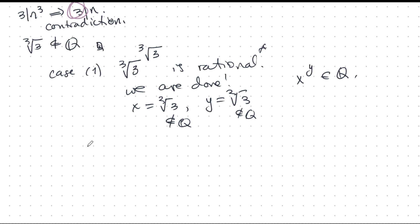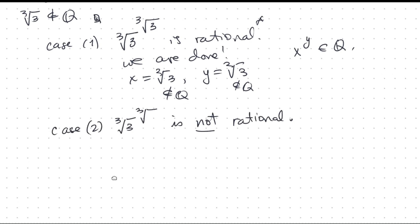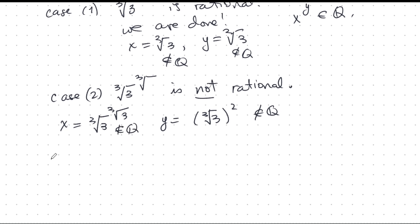But what happens if this is not rational? Well, that's case 2. What happens when it's not rational? We let x equal cube root 3 to the power of cube root 3. There's going to be a lot of cube roots here. And we'll take y is cube root 3 squared. And we know this is not rational by hypothesis because this is case 2.